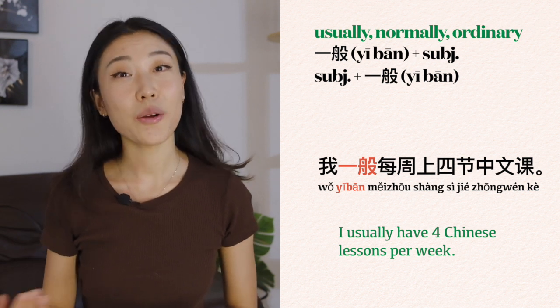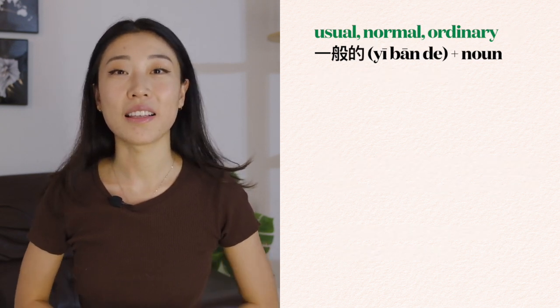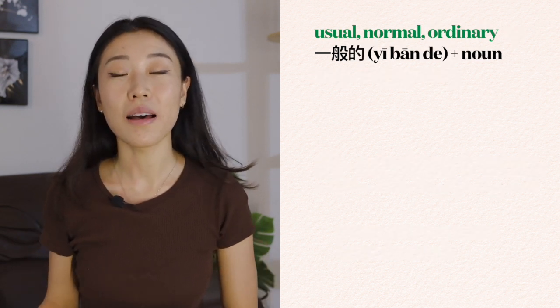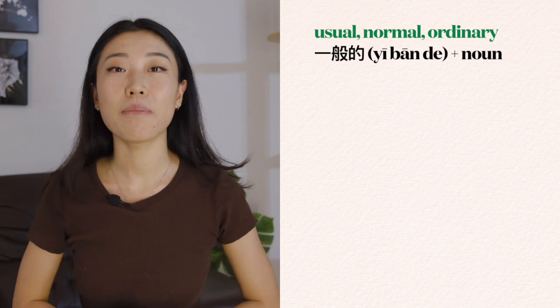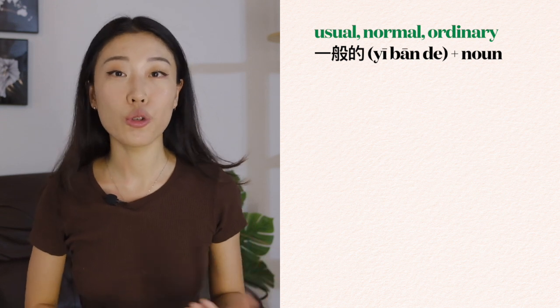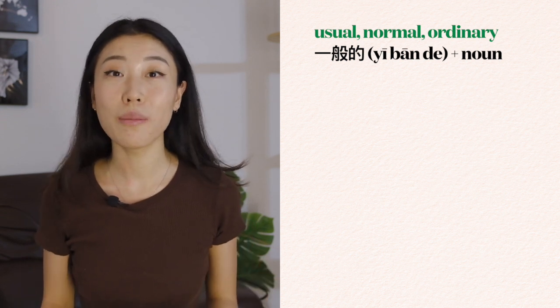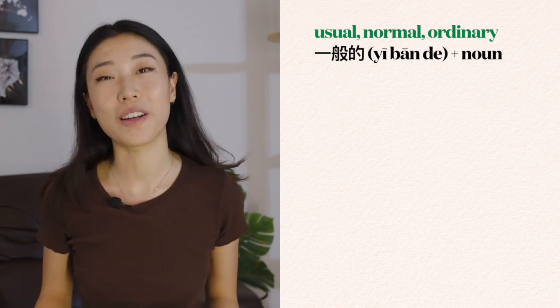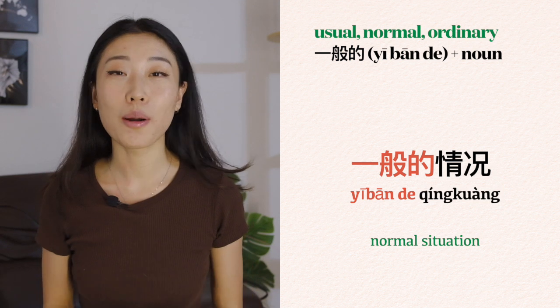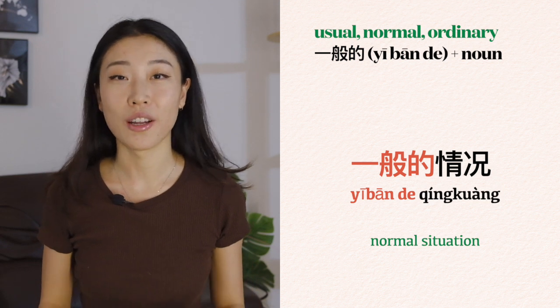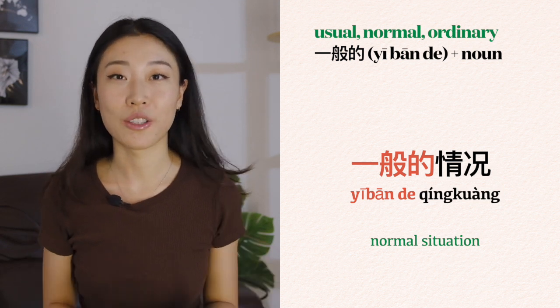Another way to use it is 一般的 plus a noun. In this case, 一般的 means usual, normal, or ordinary. For instance, a normal condition, a normal situation.